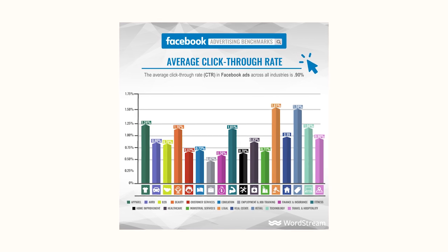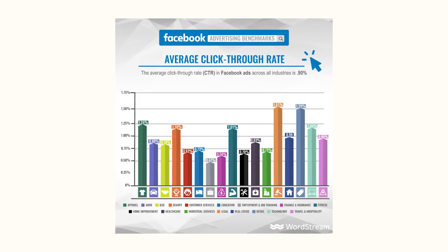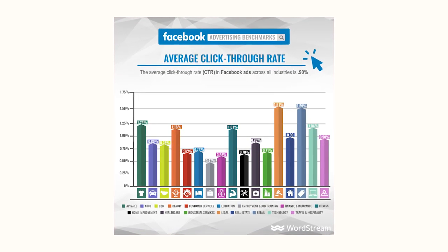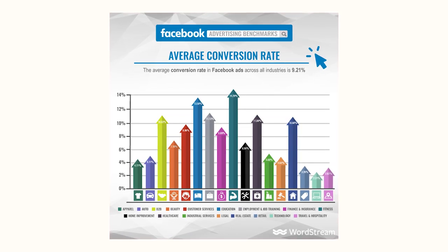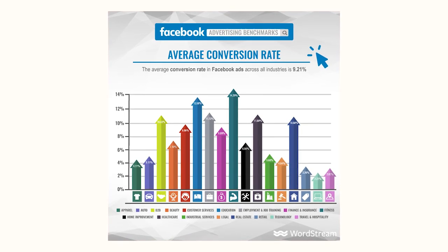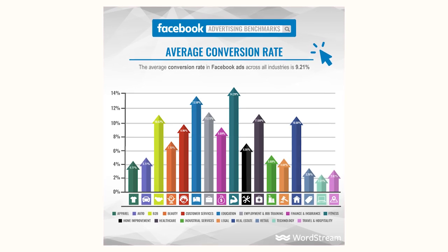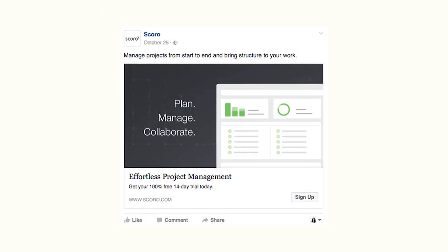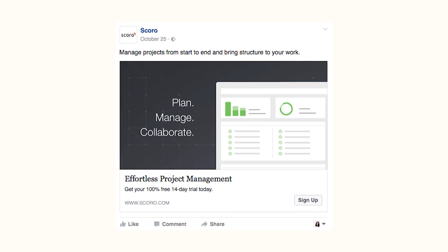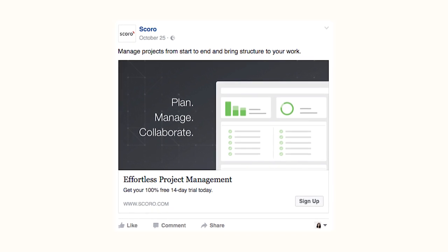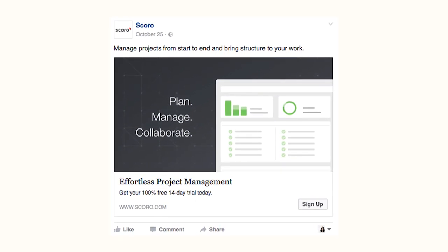According to data from WordStream, the average click-through rate across all industries for Facebook ads is 0.90%, and the average conversion rate is 9.21%, making that 70% conversion rate from Squirrel super impressive. And the concept behind their ad, like all the best things in life, was really, really simple: minimal text, clean graphics, and a single call to action.